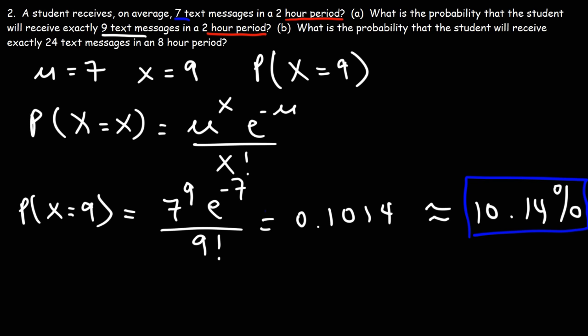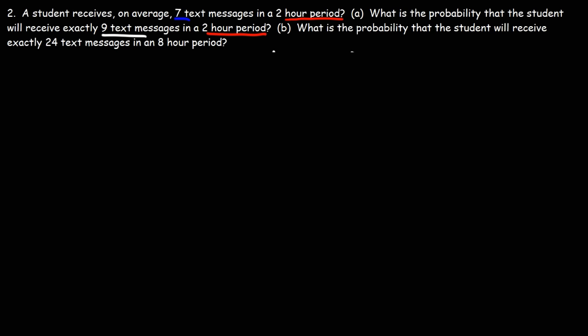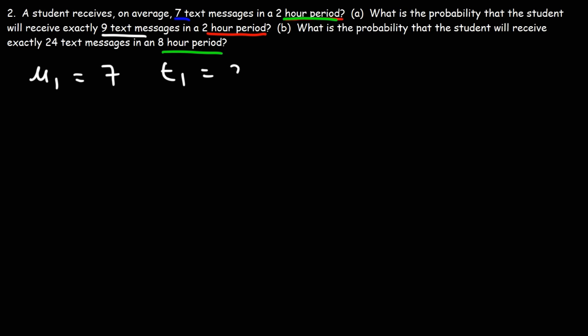Now let's move on to part B. What is the probability that the student will receive exactly 24 text messages in an 8-hour period? Notice this time the time period is different — it's 8 hours instead of 2 hours — so the mean is going to change. The mean was 7 for a 2-hour period. What is the new mean value when the time period is 8 hours?